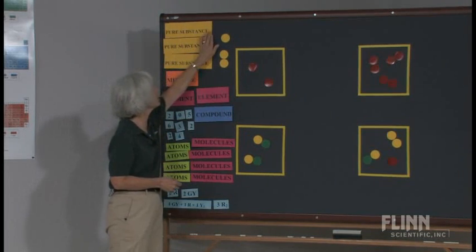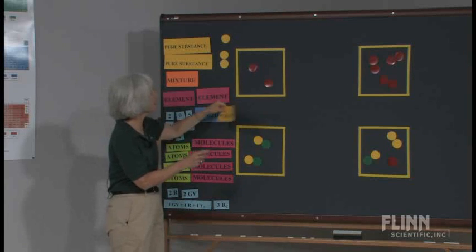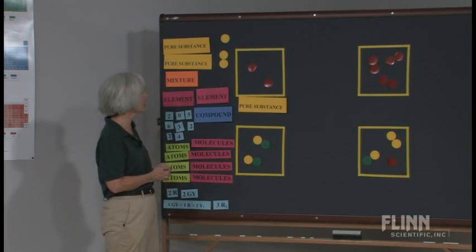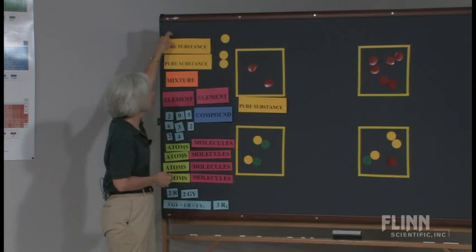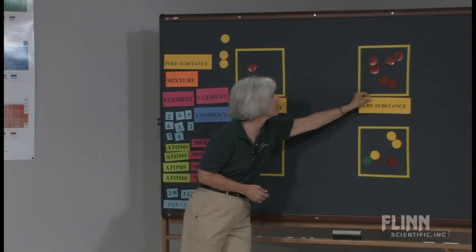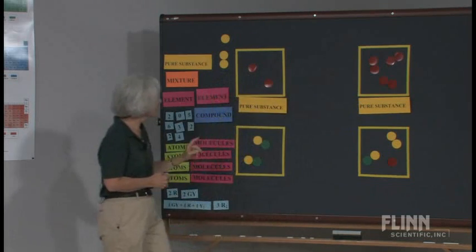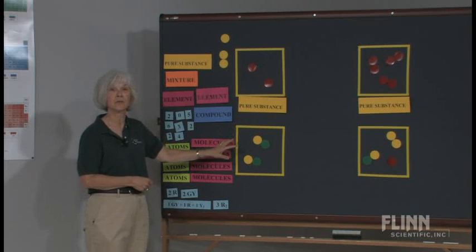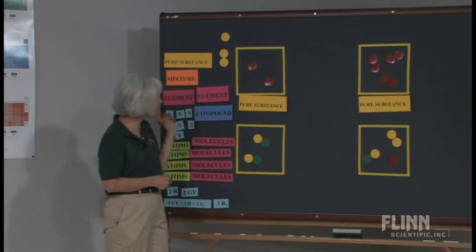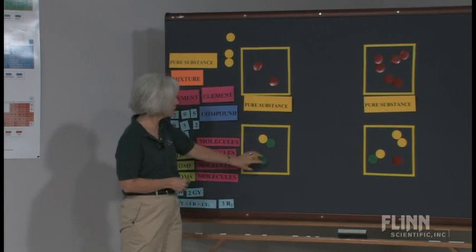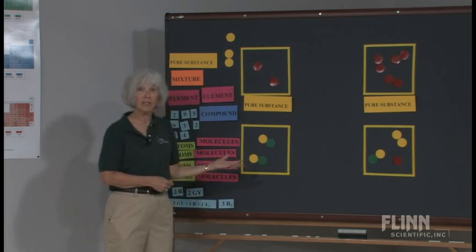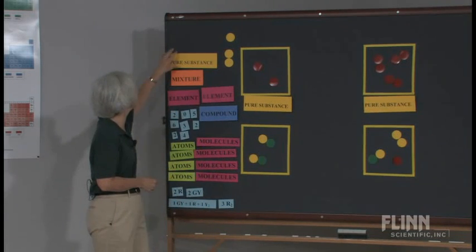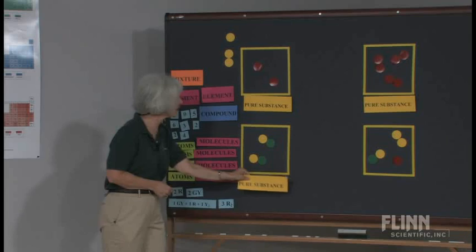So using that as our criterion, we would say that this container is a pure substance, and this container is a pure substance. They get a little bit confused when you get down here because they see two different colors. But what you stress is, does this look the same as this? And of course, they have to answer yes. So that also is a pure substance.